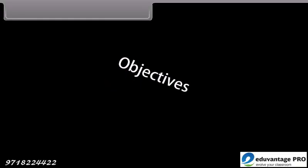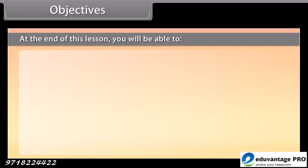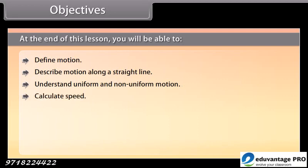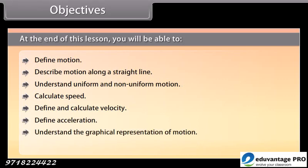Objectives. At the end of this lesson, you will be able to: define motion, describe motion along a straight line, understand uniform and non-uniform motion, calculate speed, define and calculate velocity, define acceleration, understand the graphical representation of motion, and explain uniform circular motion.